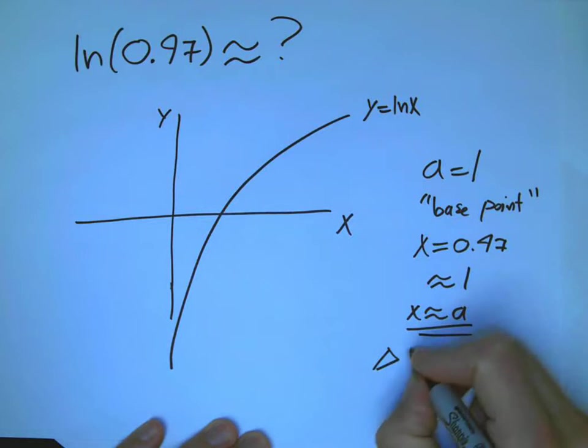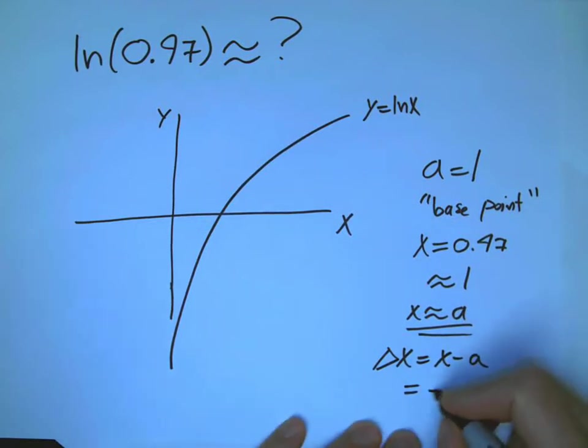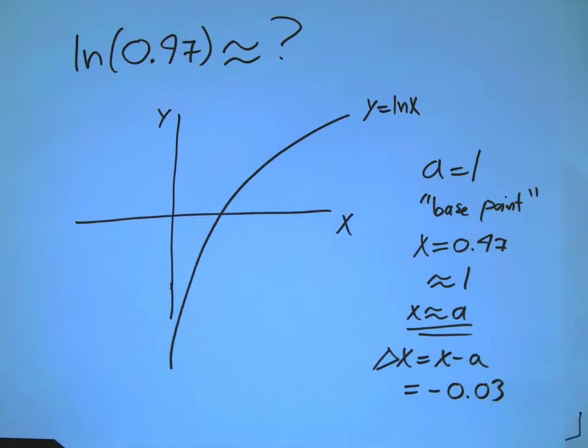And very important is going to be the delta x, which is just a shorthand for x minus a. And very, very important is that that's going to be negative. We have to be careful about that. That's a very common source of error, not to pay attention to that.